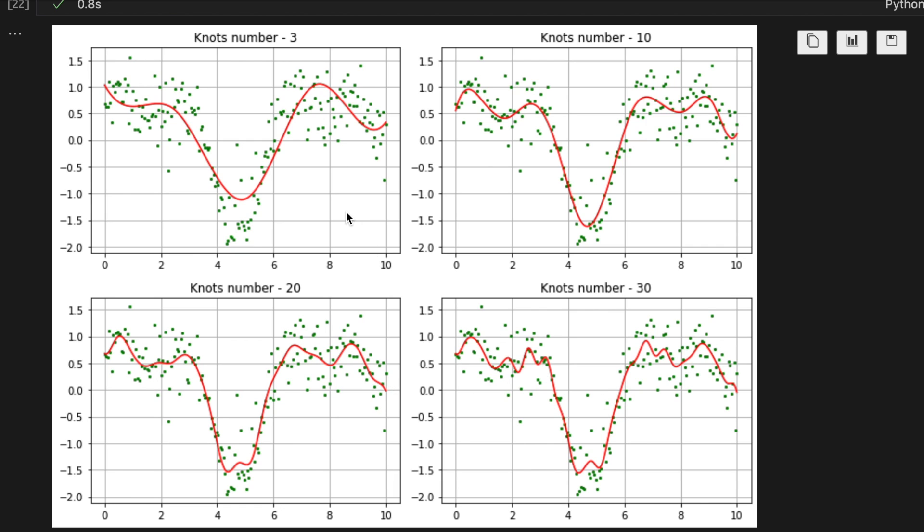The first one is much smoother. And if we increase node number, there some overfitting happens. So you can choose the appropriate node number based on your fitting criteria.